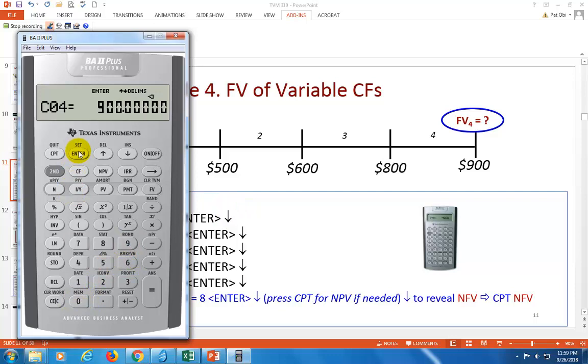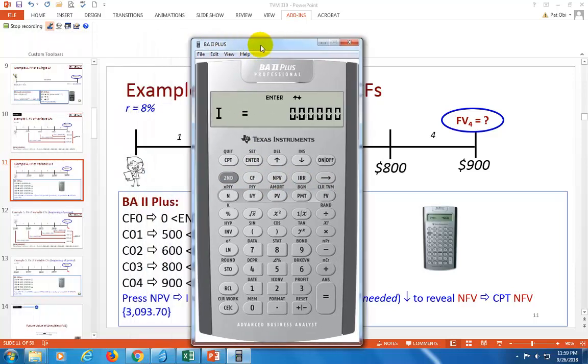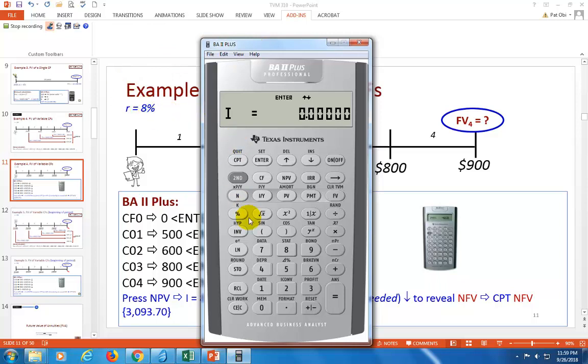We're done. Staying on this second row of keys, we hit NPV. It prompts us to put in the required rate of return, which is 8%. Type in 8 and enter. Then scroll down. It prompts you to compute NPV. We don't really need that, but let's go ahead and hit compute. That gives us the present value of these cash flows today.